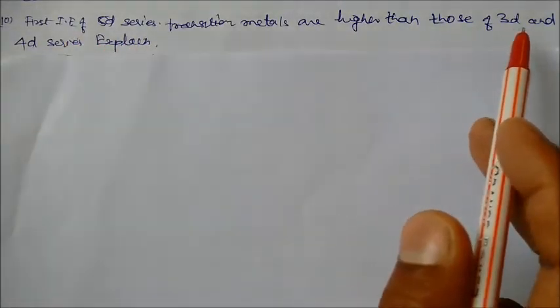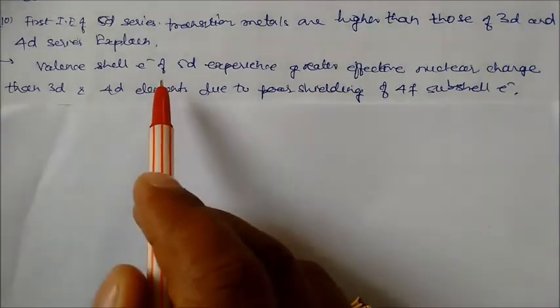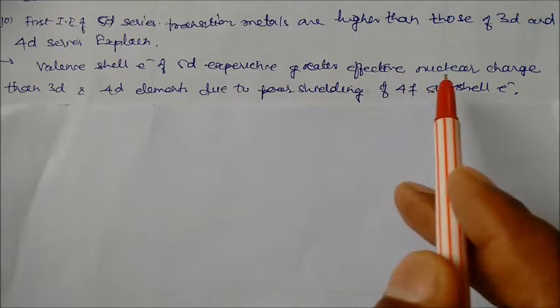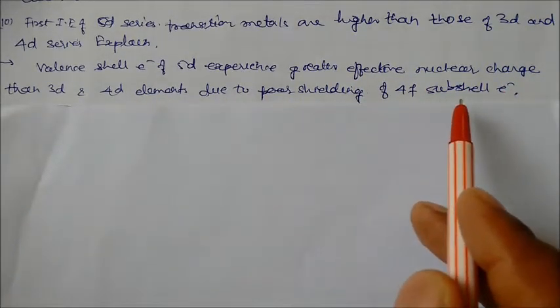First ionization energy of the 5d series transition metals are higher than those of 3d and 4d series. Explain. Actually the valence shell electrons in 5d experience greater effective nuclear charge than 3d and 4d elements due to poor shielding of 4f subshell electrons.